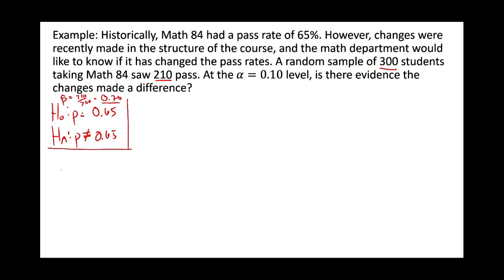The first thing you do in a hypothesis test — going back to the steps we wrote down — is get a critical value to establish your rejection region. This is a not-equal-to alternative and our alpha level is 10%, so you pull out your z-table.